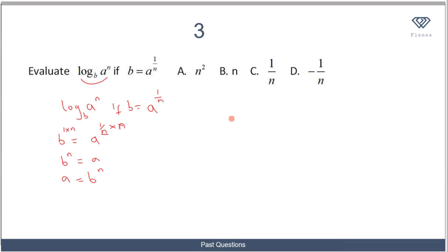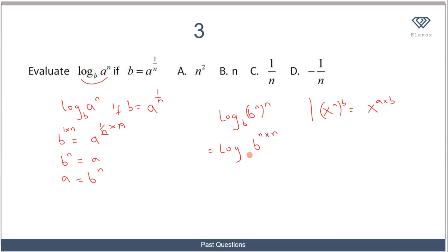Now I substitute a equals bⁿ into the original expression: log(aⁿ) base b becomes log((bⁿ)ⁿ) base b. Using the law of indices, (bⁿ)ⁿ equals b to the power of n times n, which is b^(n²). Bringing the exponent to the front gives n² log b to base b. Since the number and the base are equal, log b to base b equals 1, so the answer is n². The answer is E.